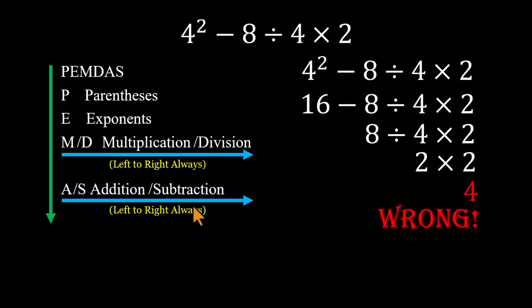Because subtraction shouldn't happen before division or multiplication. You can't just read it left to right and hope for the best. So what's the right way to do it?